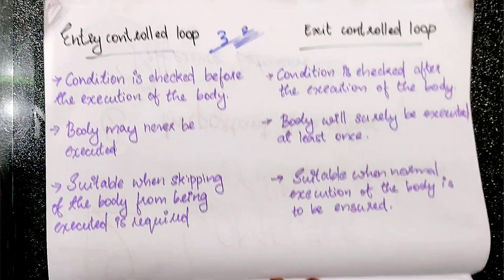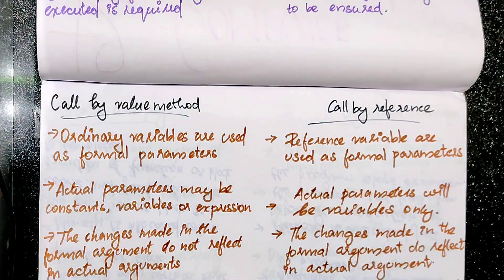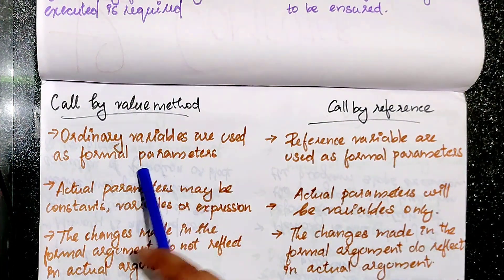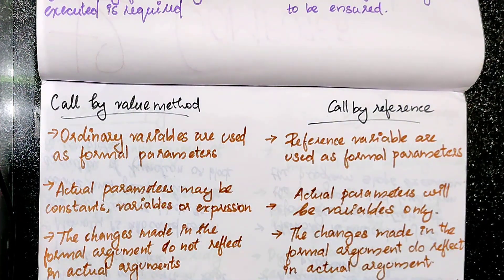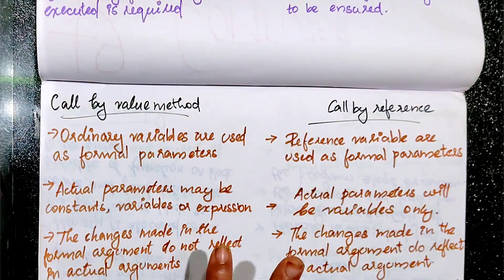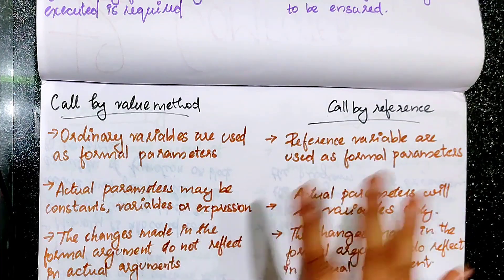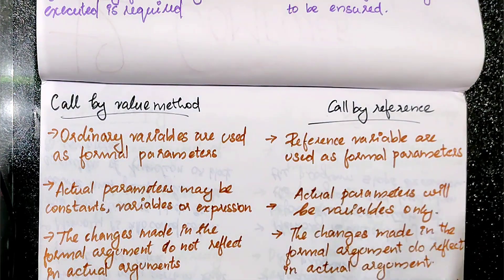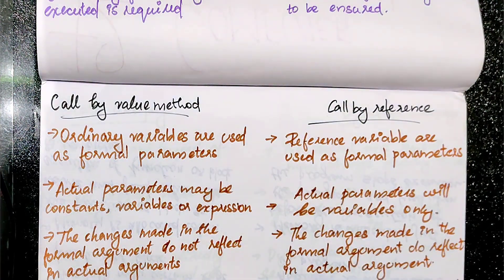We get it called by value method or call by reference method. We mention this question — each mark involves 5 marks. So, there are 4 marks for call by reference and for call by value. That's why the example of call by reference vs call by value is important.